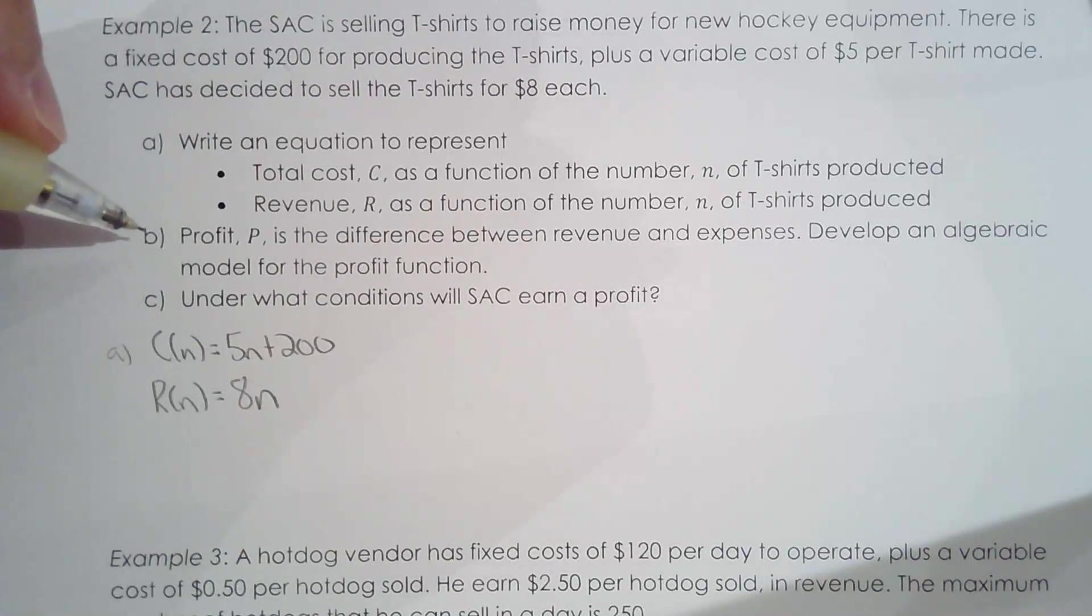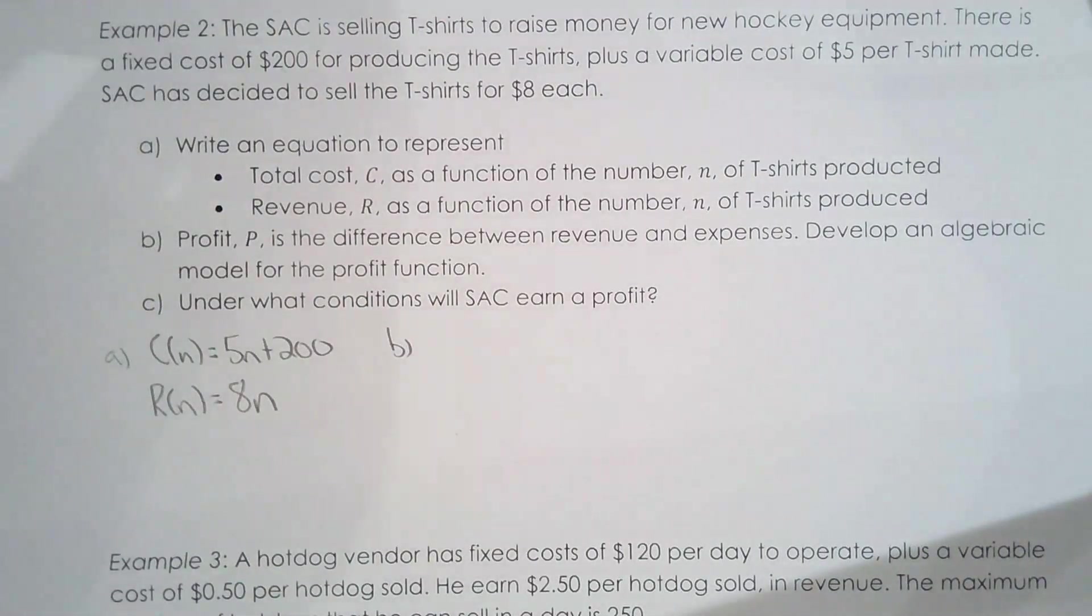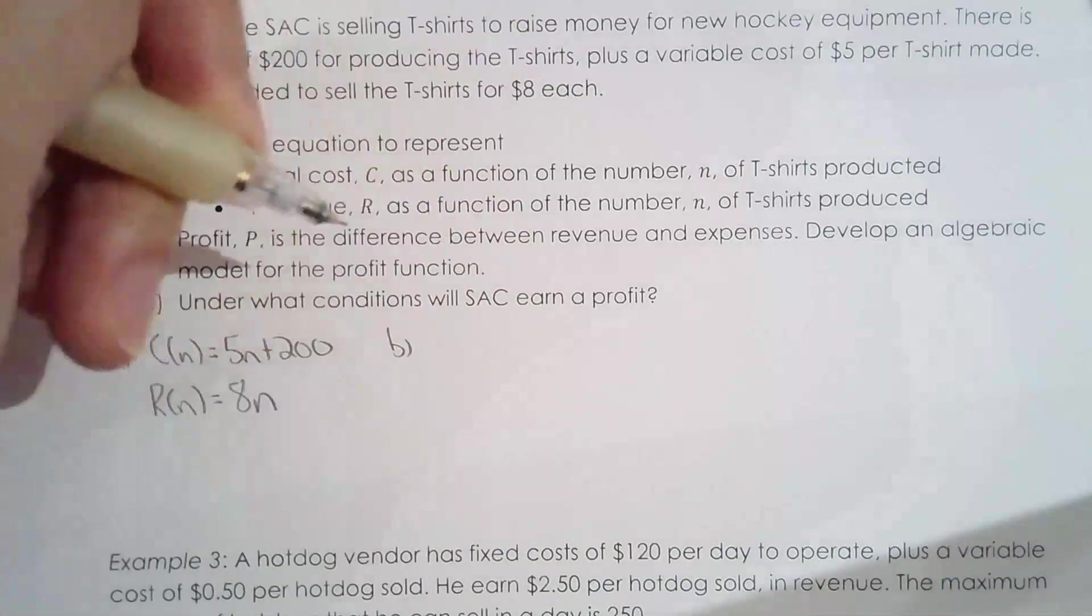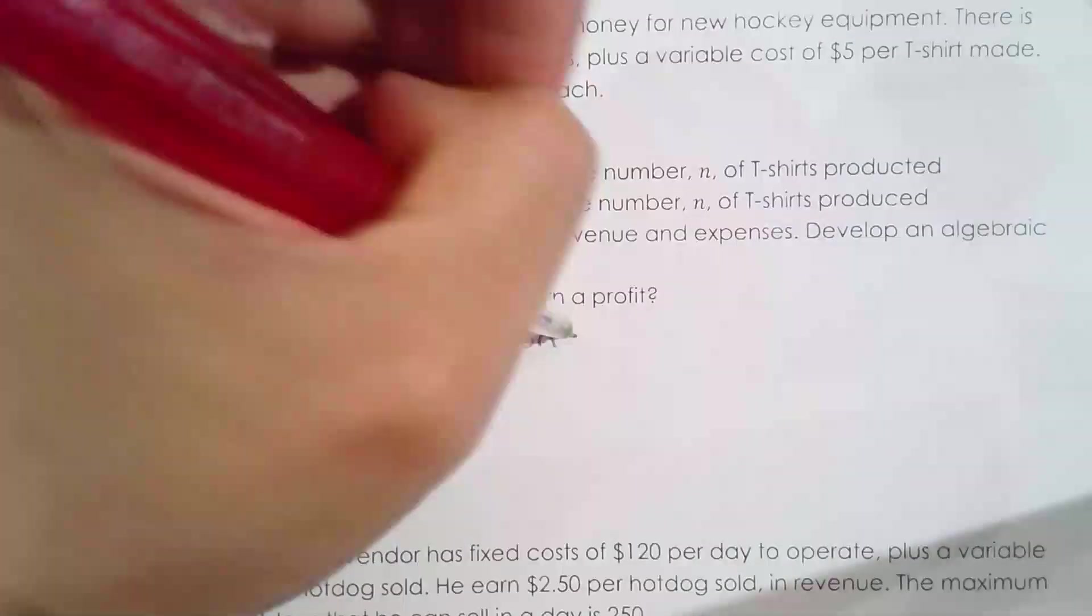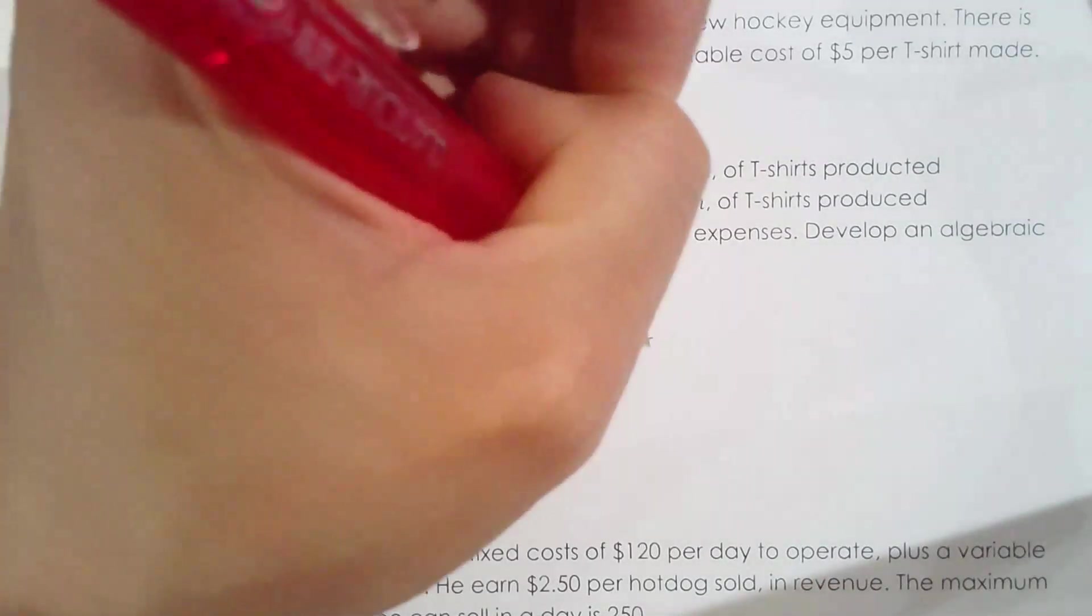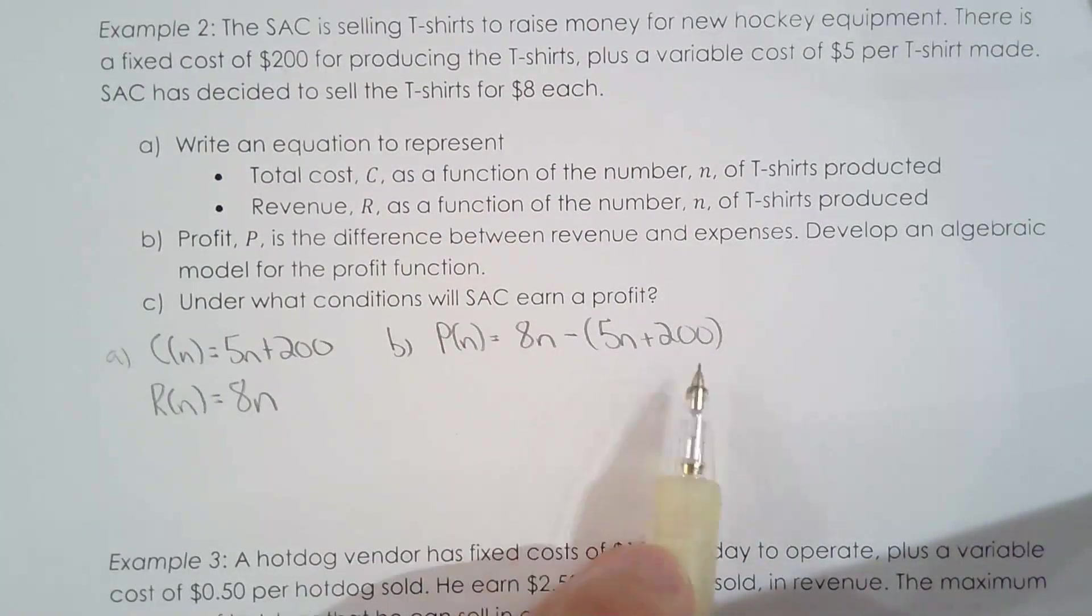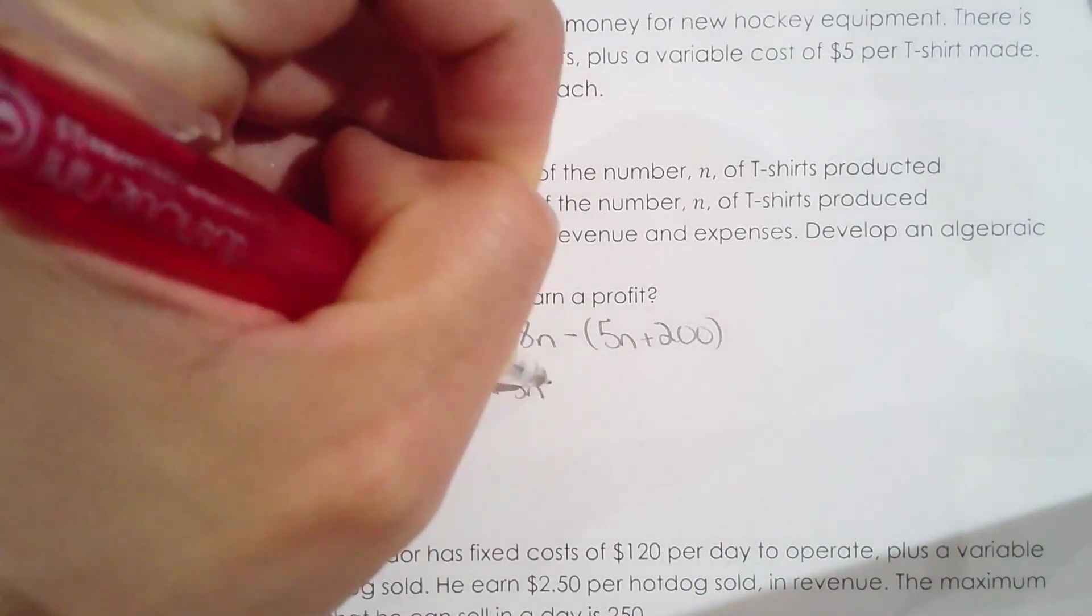For part b, they want us to find the profit function. This is an application of why you would subtract two functions, why you would want to find the difference of two functions, because the profit function could be found using the revenue and the cost function, the difference between the revenue and cost functions. So p of n is equal to 8n, the revenue, subtracted by the cost. Now, be careful: put brackets around 5n plus 200. Without the brackets, you're not subtracting the entire cost function. The cost function, in this case, is binomial, so you need to put brackets. That becomes 3n minus 200.